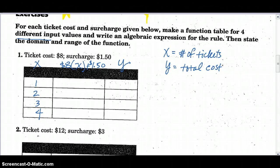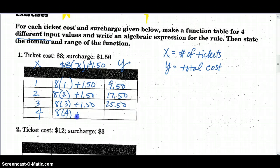I love to define my variable so everybody knows what we're talking about. So I'm going to have eight times for one ticket, so it'll be $9.50. Eight times two tickets, 16, plus $1.50 will make $17.50. Eight times three tickets, plus $1.50, that'll be $25.50. Eight times four, plus $1.50, makes $33.50. State my domain. Work on those brackets.